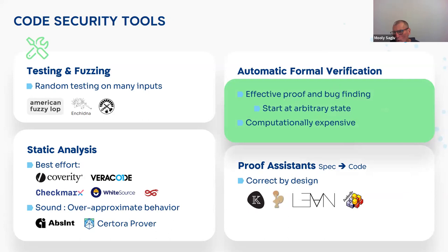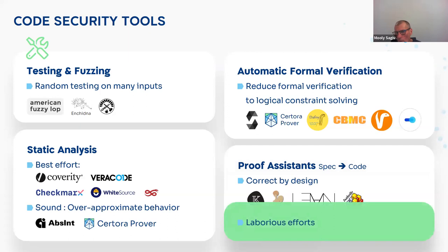The problem with automatic formal verification is that the computer is ultimately limited, so there is a question of how expensive it is — and that's what the Certora team is trying to solve. The first technology that also existed is called proof assistant, where the human is in the loop. You write your proof and extract the code from it — for example, writing your code in K, Coq, or other technology — and then derive provably correct code. In the area of smart contracts there is a company called Runtime Verification that pursues this. The limitation is that the effort is very high because you have to understand the mathematical properties of your code and then derive the code, which requires a different way of thinking than normal programming.